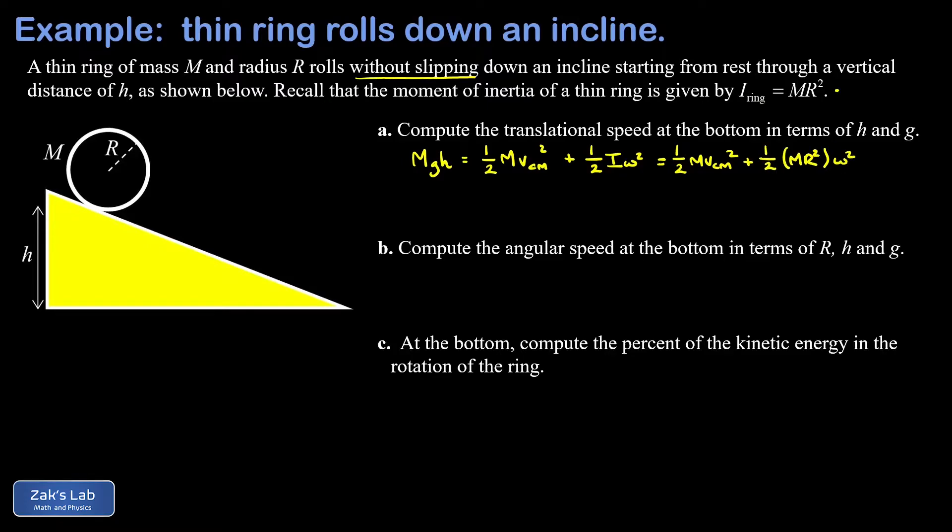The problem with this expression is that we have both the translational velocity, the velocity of the center of mass, together with the rotational velocity on the right hand side. We want to eliminate one of these in favor of the other. And what we're asked for in this problem is the translational speed.